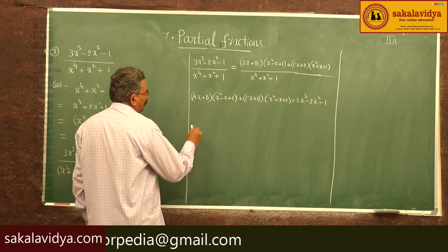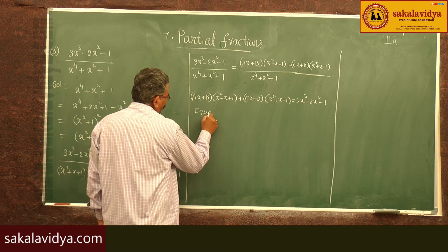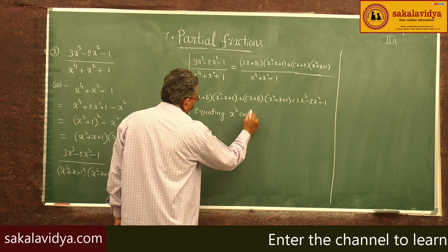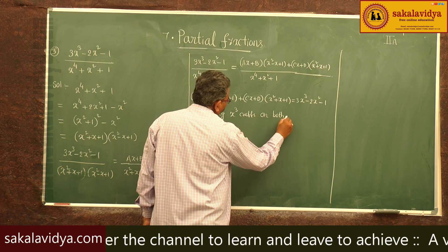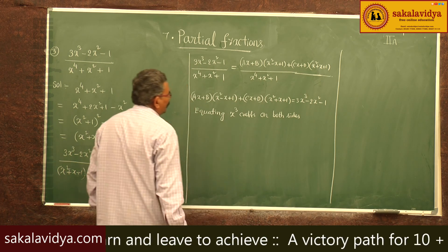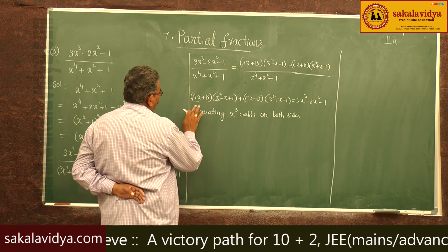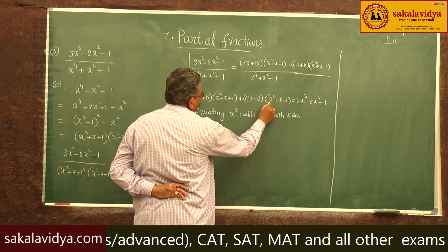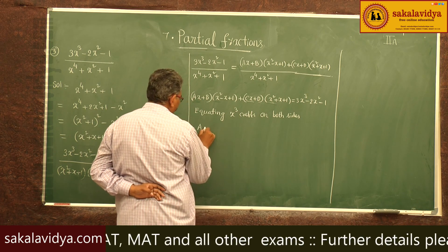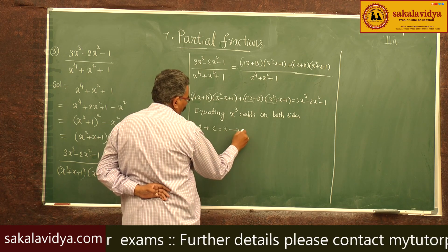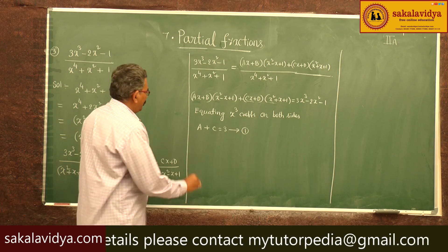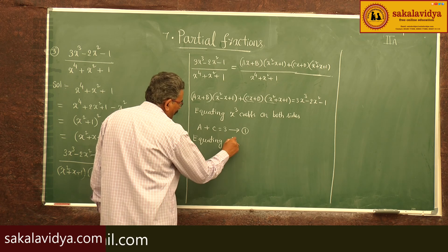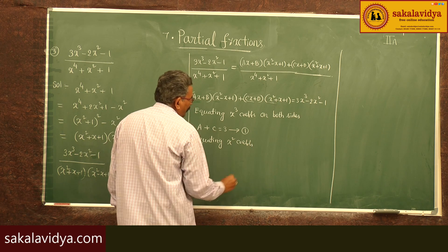Now equating x³ coefficients on both sides: from ax·x² we get ax³, and from cx·x² we get cx³. So a + c = 3 — equation 1. Equating x² coefficients on both sides: